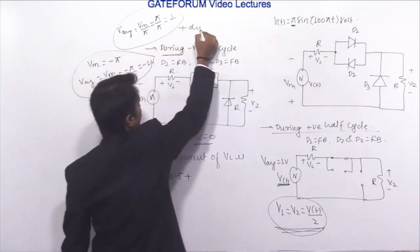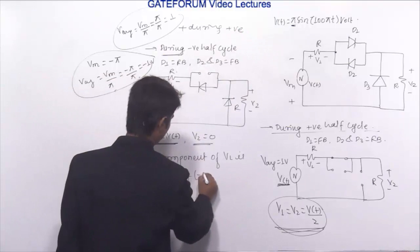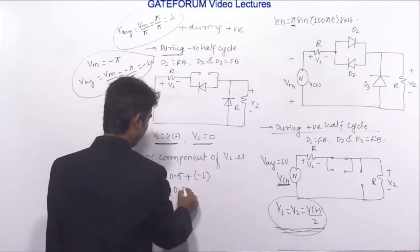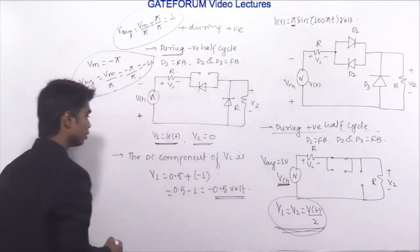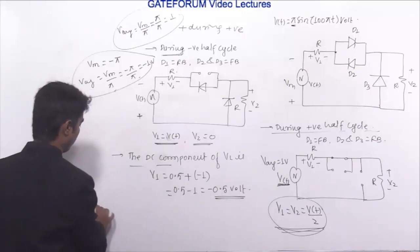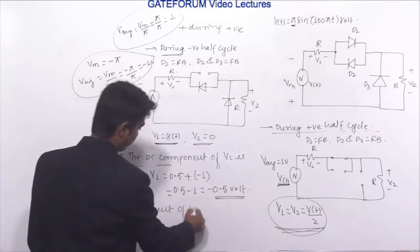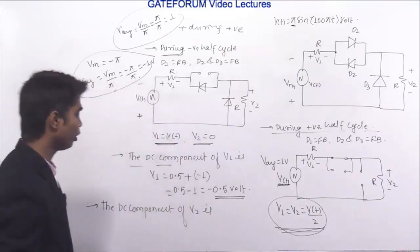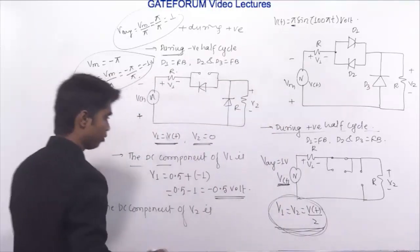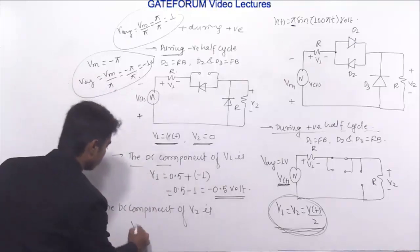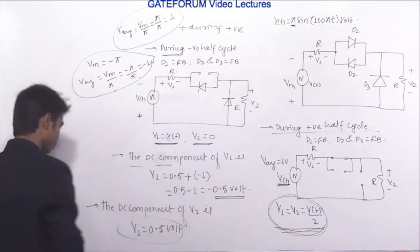The DC component of V1 is minus 0.5 volt. For V2: V2 only appears during the positive half cycle — in the negative half cycle V2 is 0. We know it is equally divided, so V2 equals 0.5 volt. The DC component of V2 is 0.5 volt.